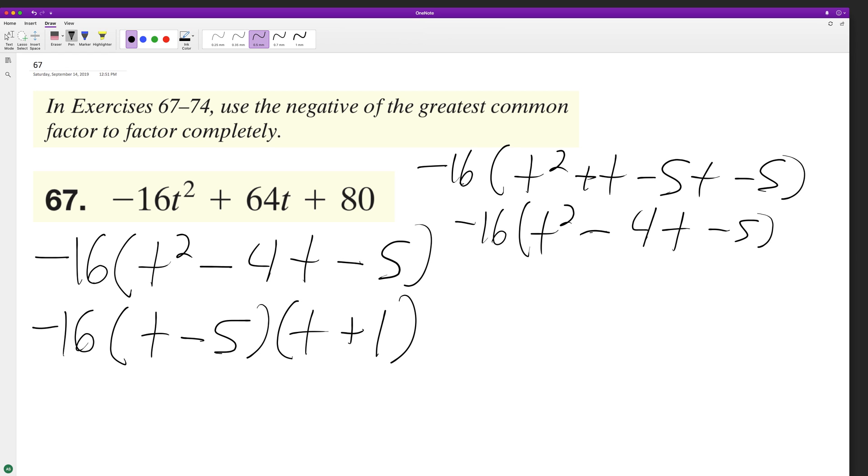Oh, minus 5. And then just distribute the negative 16. We get negative 16t squared plus 64t plus 80.